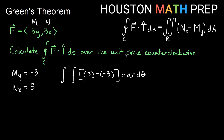For the unit circle, the bounds for r go from 0 to 1. For the entire unit circle, θ goes from 0 to 2π. Simplifying: 3 minus negative 3 gives us 6, so we're integrating 6r with respect to r. Doing the inside integral first and keeping our outer integral from 0 to 2π: integrating 6r gives 3r², evaluated from r = 0 to 1.